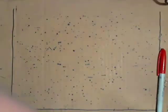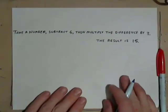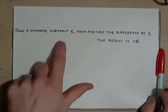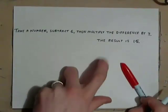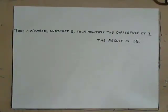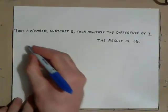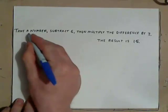Let's have a look at this example. Take a number, subtract 6, then multiply the difference by 3. The result is 15. Take a number, here we go, x. There's a number.